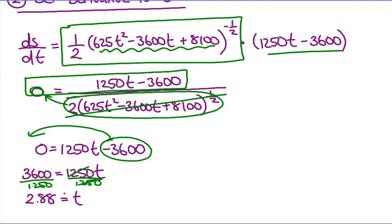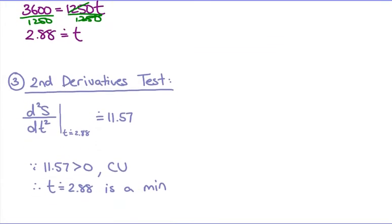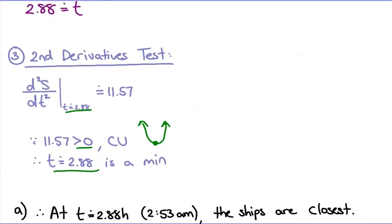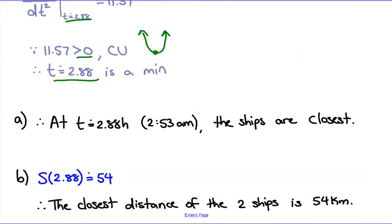That critical value represents the time of a maximum or minimum — I just don't know which yet, which is why we do the second derivative test. Taking the second derivative and substituting 2.88, I get about 11.6, which is greater than zero. That means concave up, which gives a minimum. That minimum happens at 2.88 hours — exactly what we're looking for, a minimum distance at 2.88 hours.